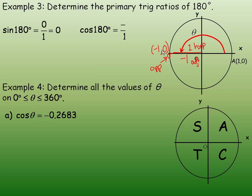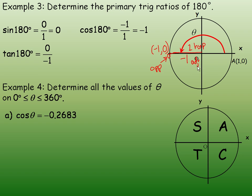The cosine of 180 degrees — remember cosine is adjacent divided by hypotenuse — so it would be negative 1 divided by 1, which is negative 1. And the tan is the opposite side divided by the adjacent side. So 0 divided by negative 1 is 0. So the tan of 180 degrees is 0.